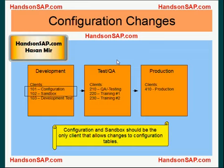We know that there are three boxes in a company: development box, test box, and production box, and you create multiple clients within each box to have partitions. For example, in the development environment, you create configuration, sandbox, and development test clients. In a test environment, you have a QA test client and some training clients. In a production box, you have a production client.